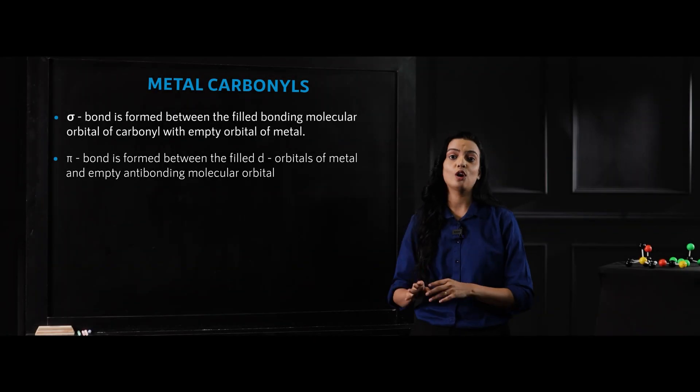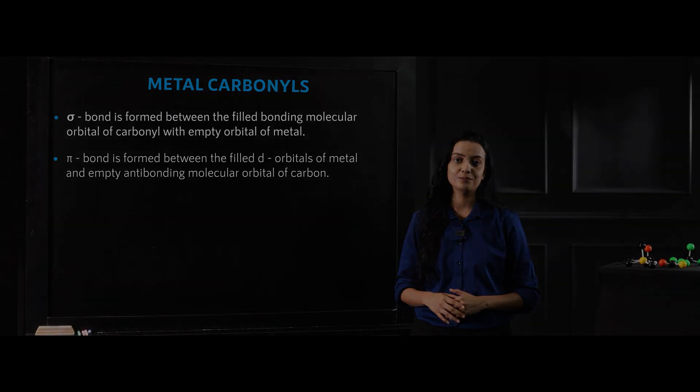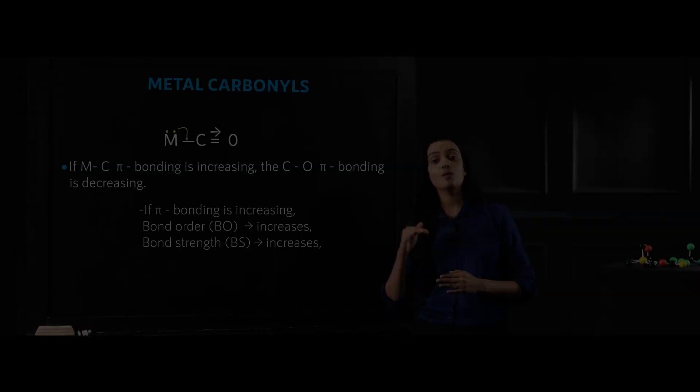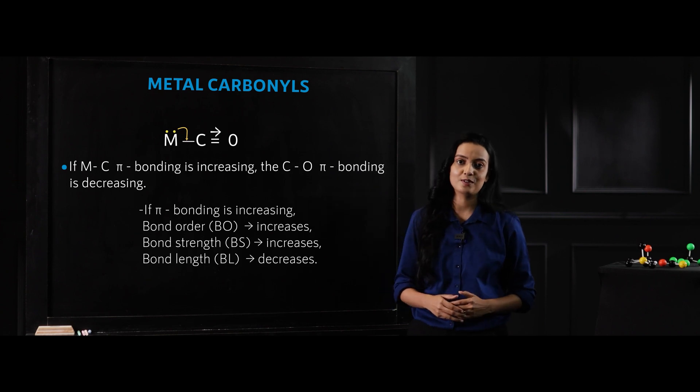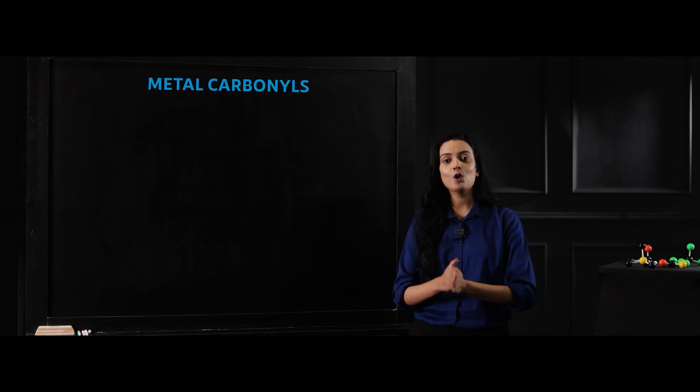At the last, we'll go through a special class of compounds where a bond is formed between an organic part and a metal. Such compounds are known as metal carbonyls. To know more about coordination compounds, let's start learning with Tutorac.